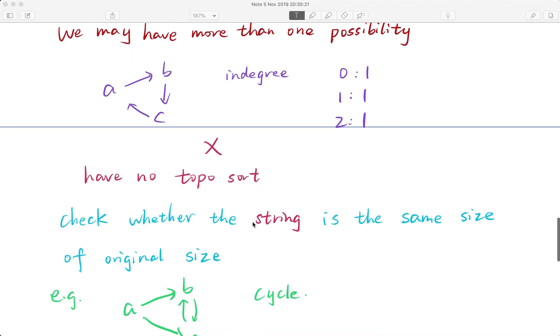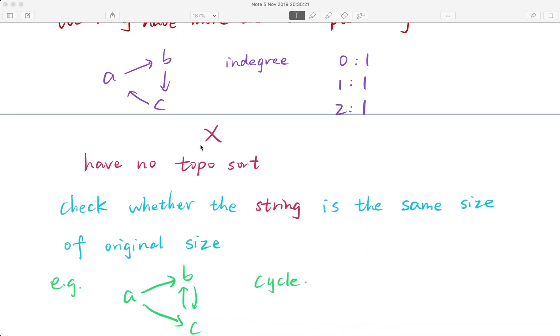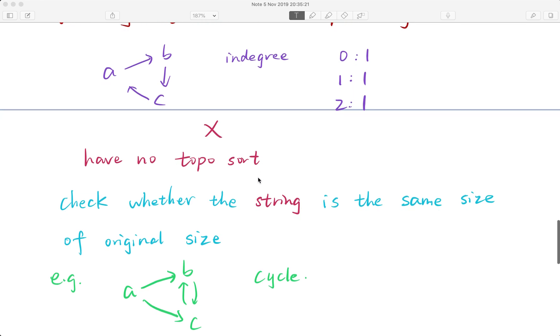We may have no topological sort. Like in this example, a has in-degree 1, b has in-degree 1, c also has in-degree 1. We do not have any node that has in-degree 0, so the queue at first is empty. We cannot generate any ordering. There is no topological sort ordering.